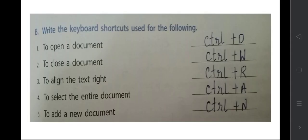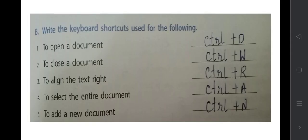Write the keyboard shortcuts: to open, it is Ctrl+O; to close, it is Ctrl+W; to align the text, it is Ctrl+R; to select the entire document, Ctrl+A; to add a new document, Ctrl+N. For aligning and selecting, you must first select the document.